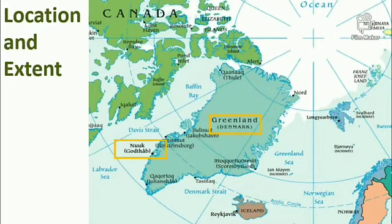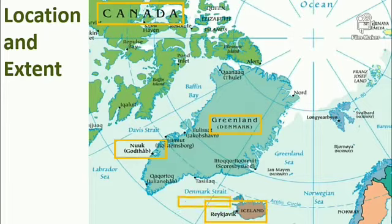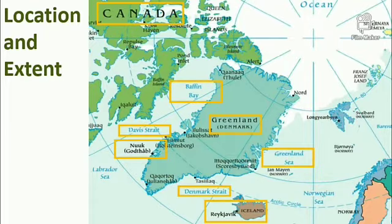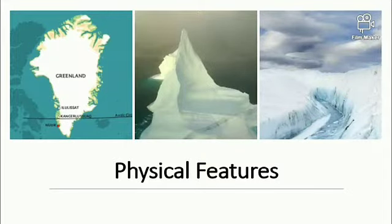The total area of Greenland is 21.5 lakh square kilometers. The island is surrounded by Denmark Strait in the southeast, Davis Strait in the southwest, Baffin Bay in the northwest, and Greenland Sea in the northeast. Canada and Iceland are the neighboring countries.